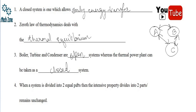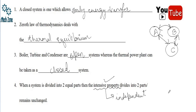When a system is divided into two equal parts, the intensive property — divides or remains unchanged? The intensive property is independent of mass, so there is no dependency on mass, and hence there will be no change. The correct answer is it remains unchanged.